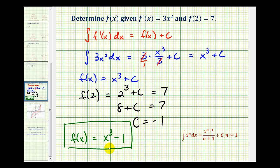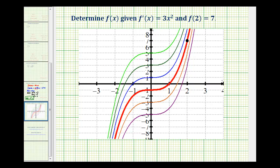Let's take a look at this graphically. What we're seeing here is the graph of several functions that have a derivative of 3x². So all these functions are members of the family f(x) equals x³ plus c.